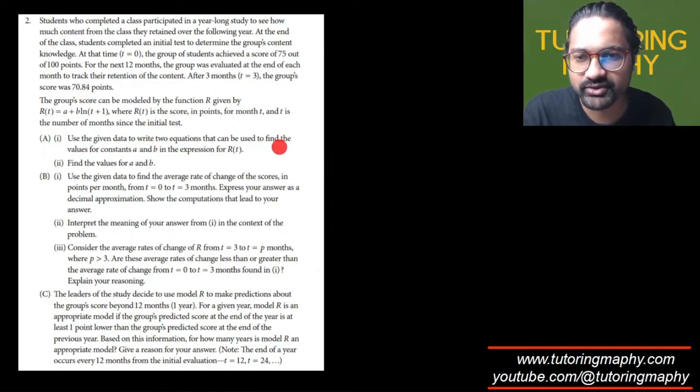The group score can be modeled by the logarithmic function where r is the score and t is the number of months since the initial test was carried out. Given the data, write two equations that can be used to find the values of a and b. That's pretty straightforward.